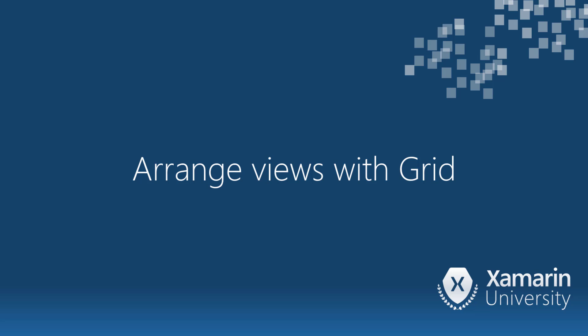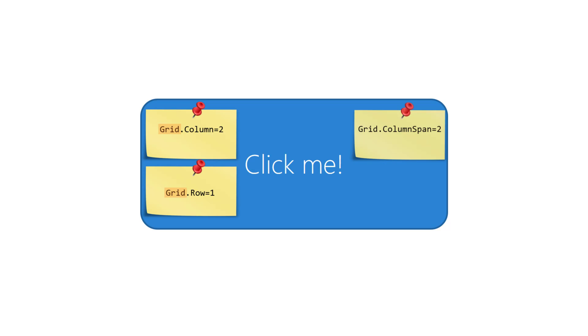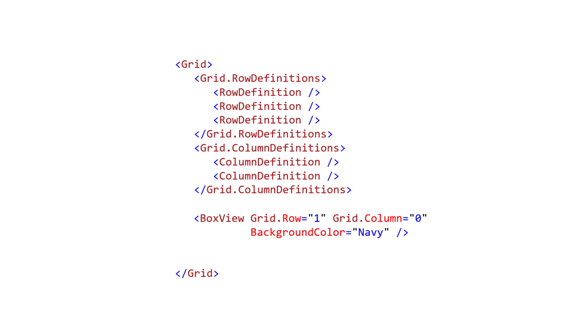Now that our grid is looking the way we want it, let's get our views placed where we want them in that grid. Rows and columns are numbered starting at zero, with the origin in the upper left corner. When you add a child into a grid, you need to tell the grid where to put it. Grid has four attached properties to control this. Column and row position the child in a specific cell, and column span and row span allow a child to occupy multiple cells. Generally, you want to attach row and column properties to every child view in a grid.